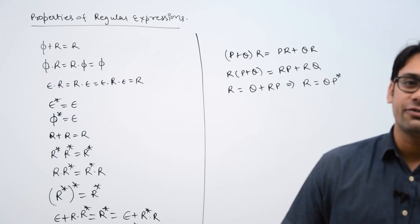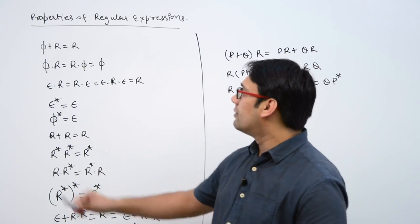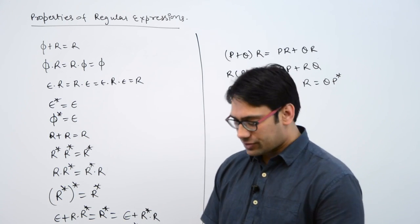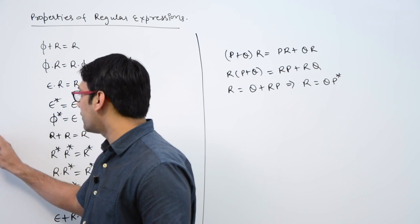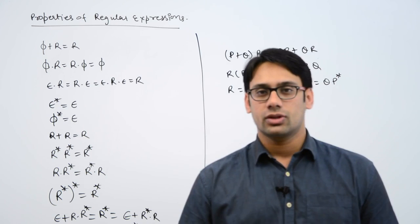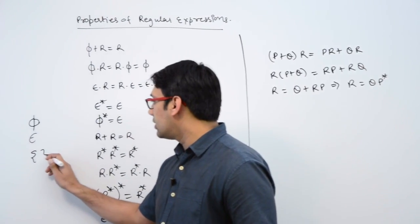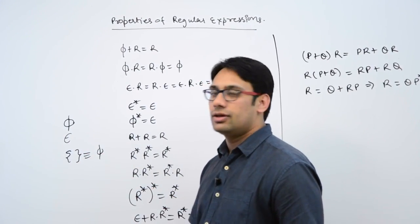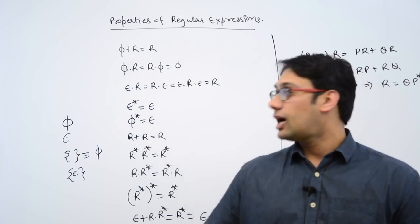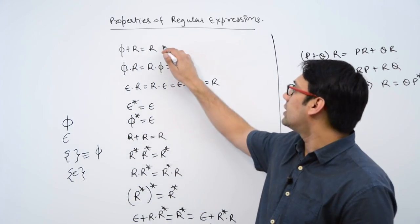Let us look at a few properties of regular expressions. The first property is φ + r = r, where r represents a regular expression. Note that there is a difference between φ and ε: epsilon means it is a string whose length is 0, it is not an empty set, while φ represents an empty set. So if you do a union of any regular expression with an empty set, you will get that particular regular expression.